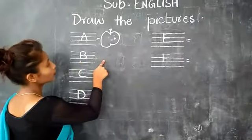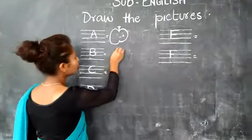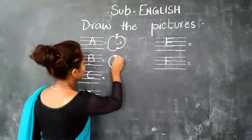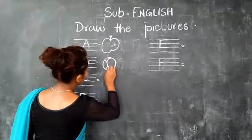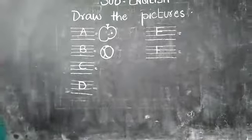B for ball. What do you have to draw here? Ball. C for cat.